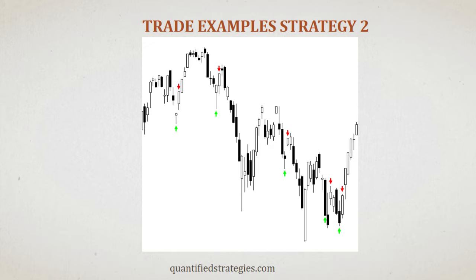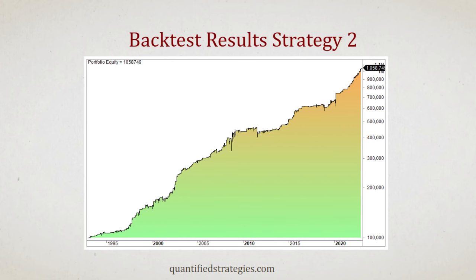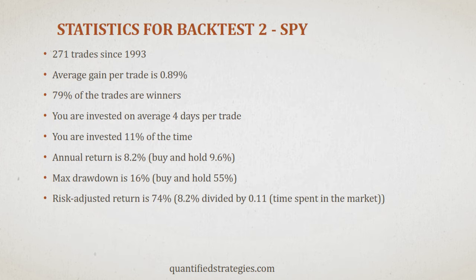Looking at the bigger picture, a $100,000 investment would have compounded annually at 8.2% from 1993 until today, growing to $1.058 million. The equity curve rises steadily. There are 271 trades that on average are invested just four days, making you invested only 11% of the time and avoiding the worst drawdowns. Max drawdown is just 16%, and the risk-adjusted return is very high at 74%.